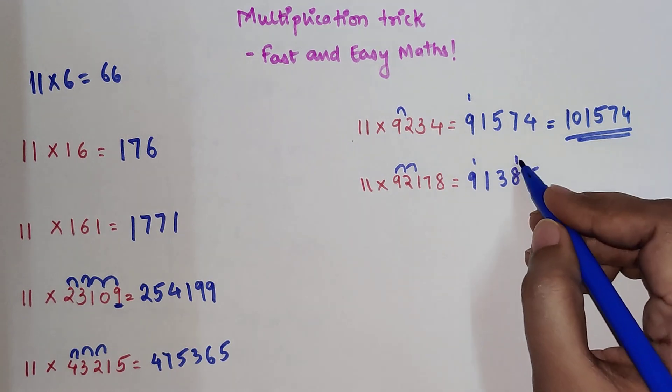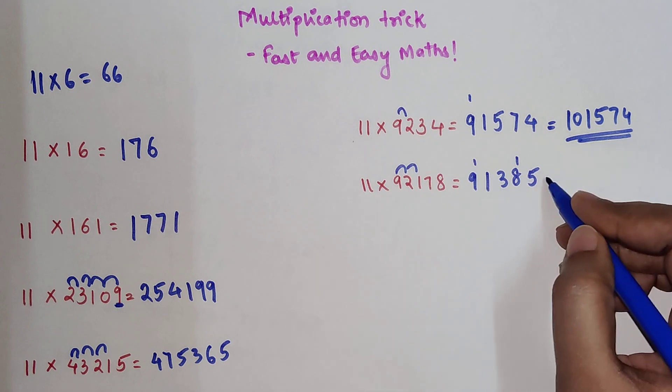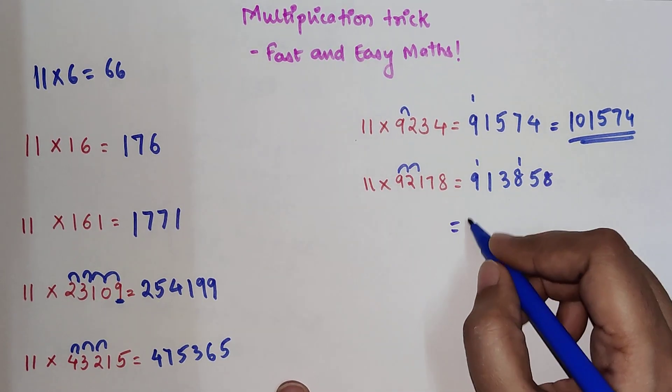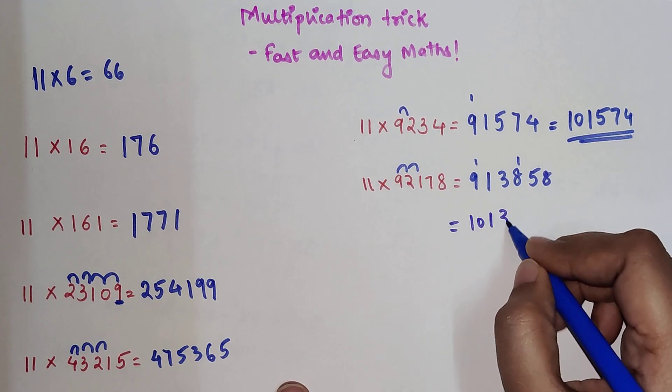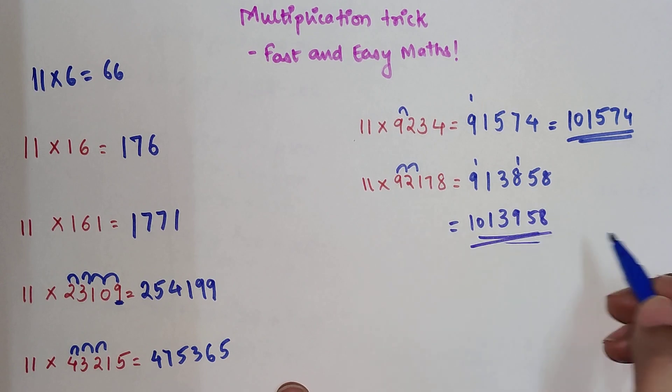Then 8 will be written as it is. So now you have this, which is nothing but 1013958. I hope you got the point. So now time for your DIY.